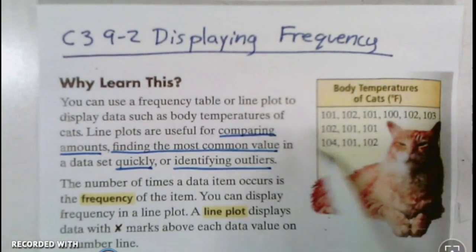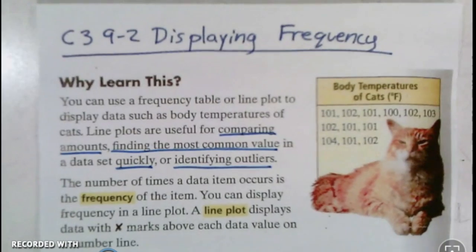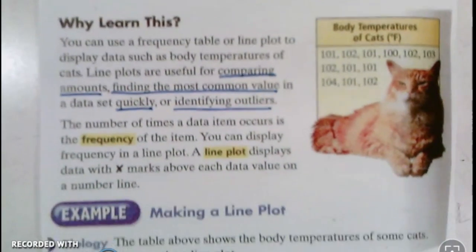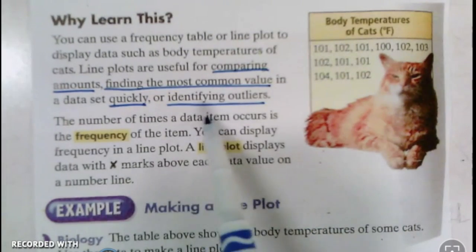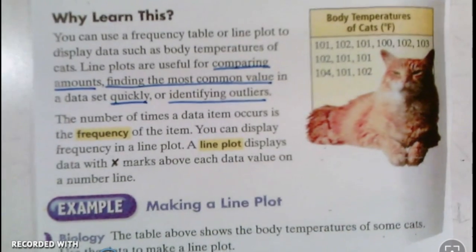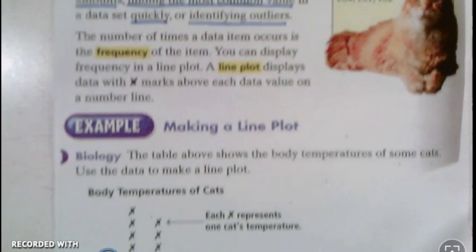We got a cat who's got all different body temperatures and we want to organize it in something called a line plot. These are really useful for either comparing amounts, finding the most common value, or identifying outliers. We use little x's to show each time that data appears.